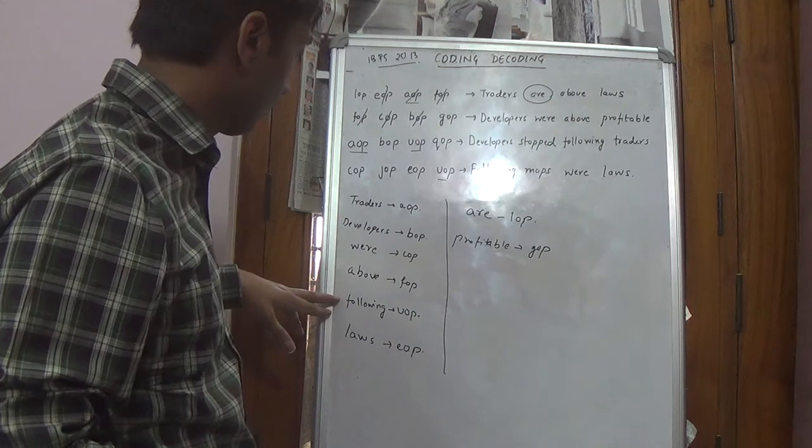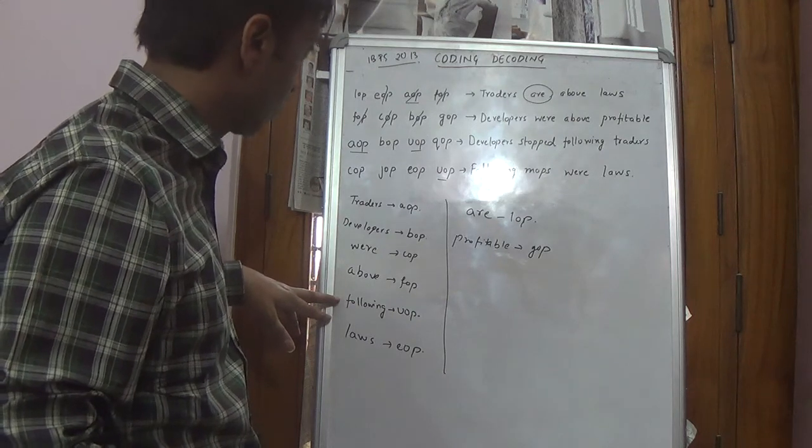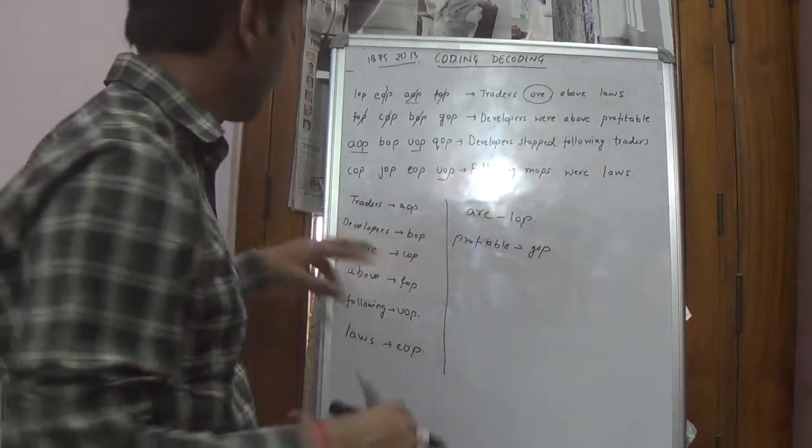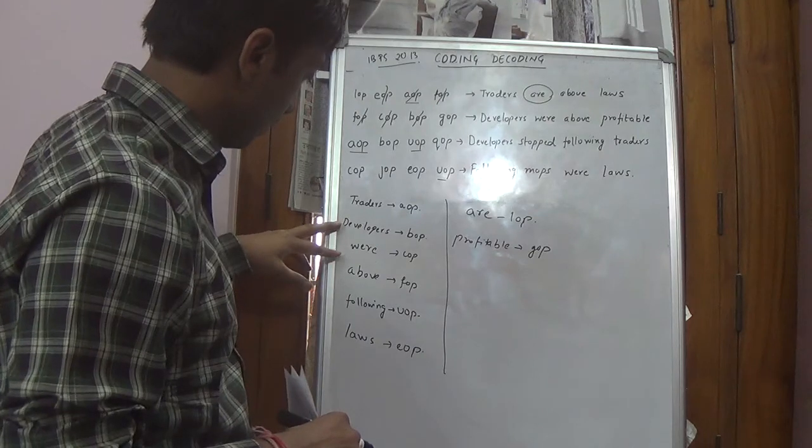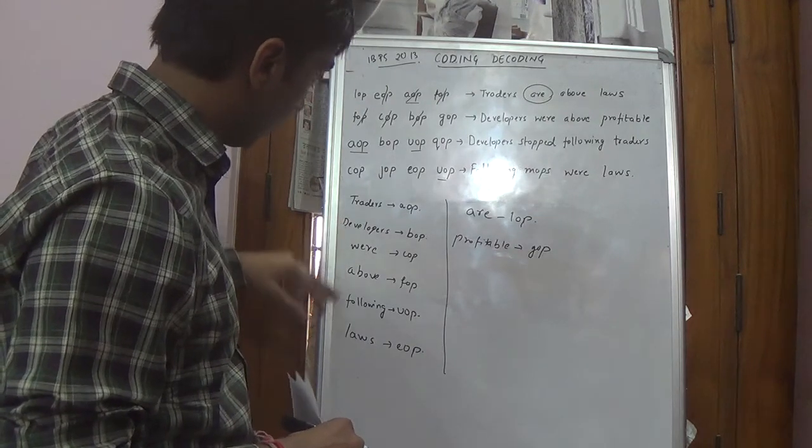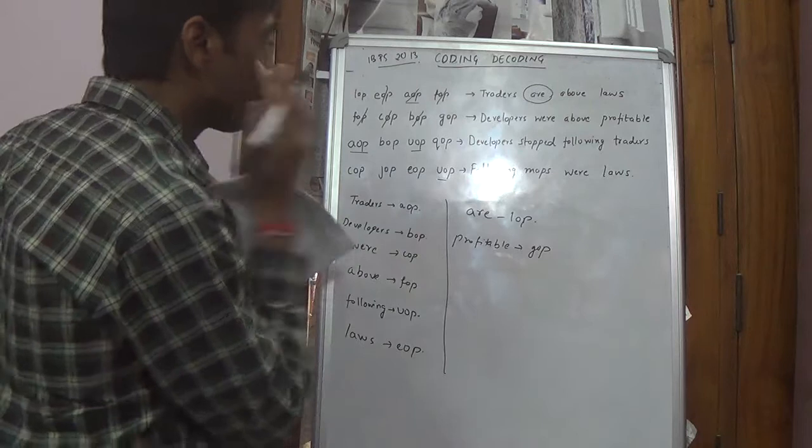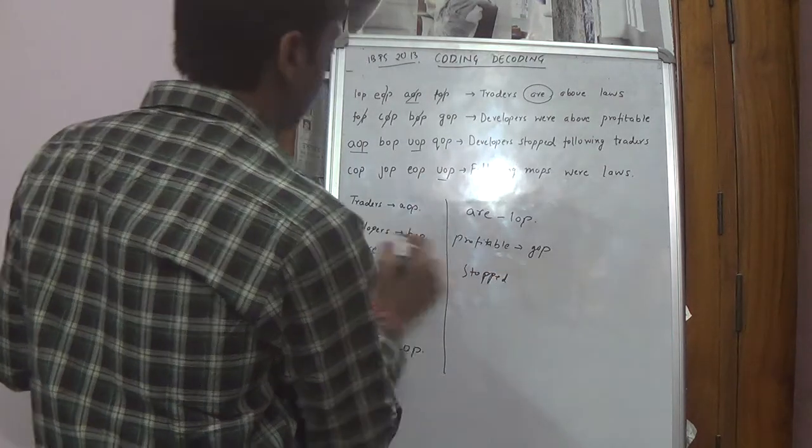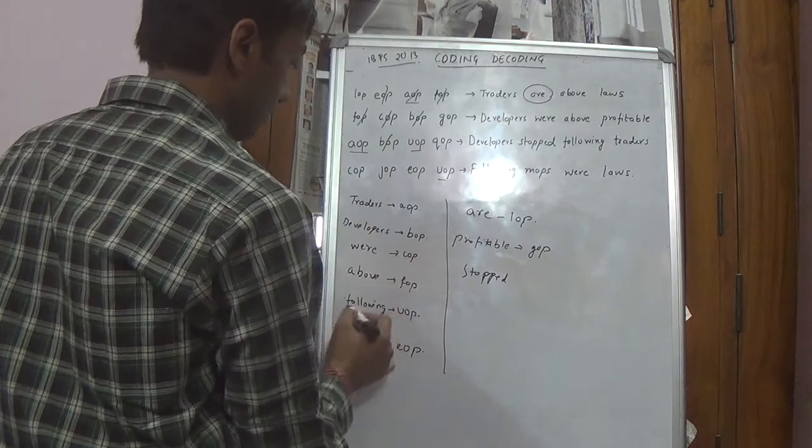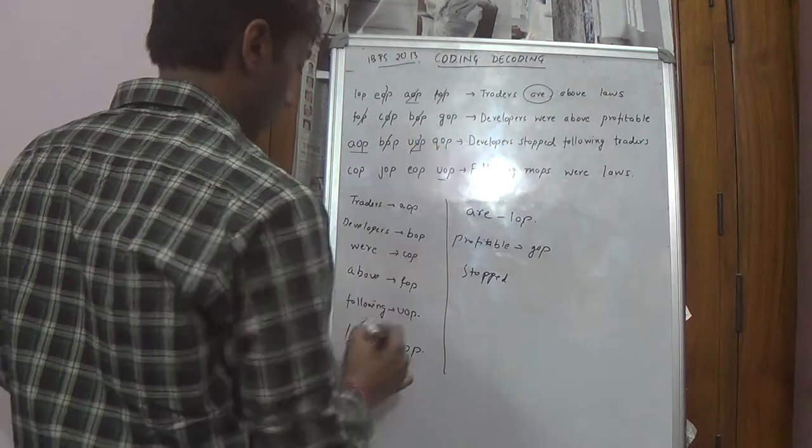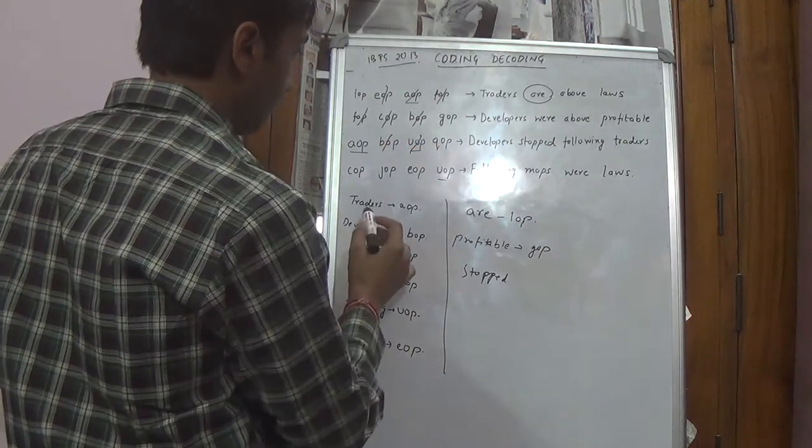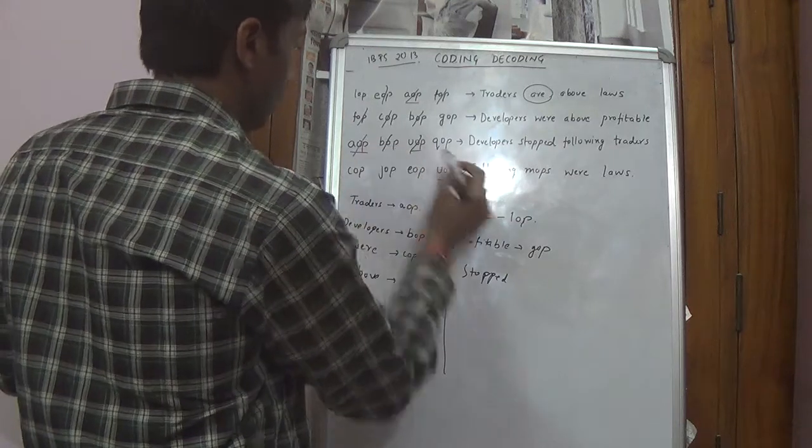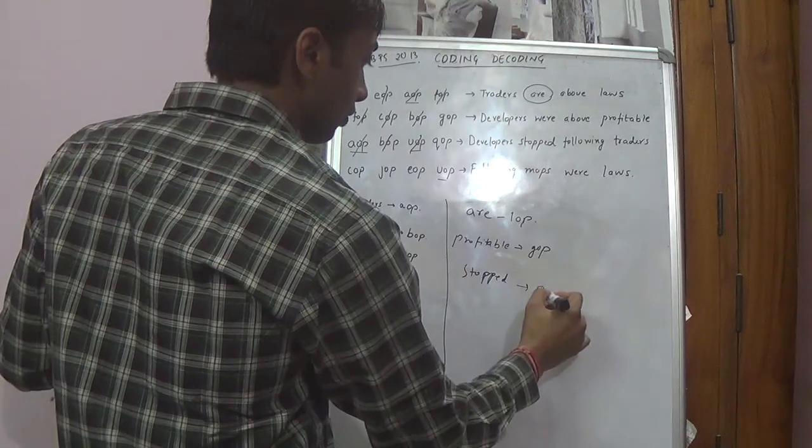Similarly, developers stopped following traders. Developers following traders we have got three. We need stopped. Developers is BOP. Following is UOP. And traders is AOP. So stopped is QOP.